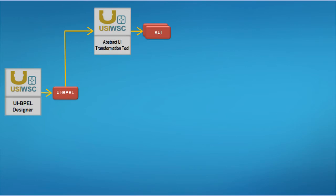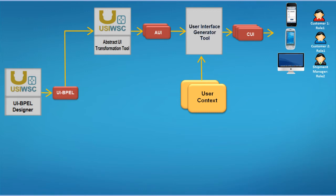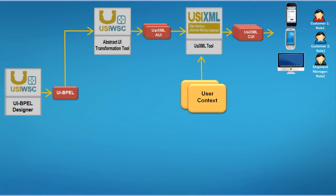First, a transformation tool generates an abstract user interface that describes a user interface independent of any modality and independent of user context. Second, the generated abstract user interface is transformed at runtime to a concrete user interface adapted to a specific user context. This concrete interface is interpreted by the user's devices. The USIWSC framework describes the generated abstract and concrete user interfaces using the UZXML language, which is a good candidate to become the standard of user interface description. For this reason, the framework uses a UZXML tool to generate a concrete user interface based on context.